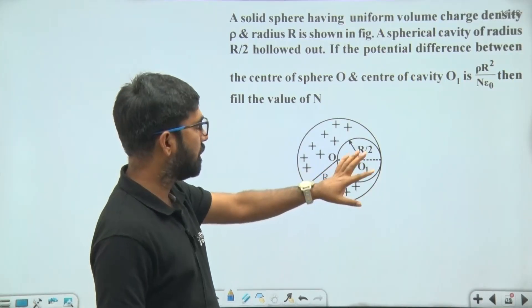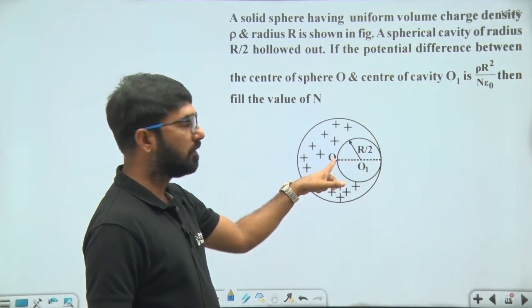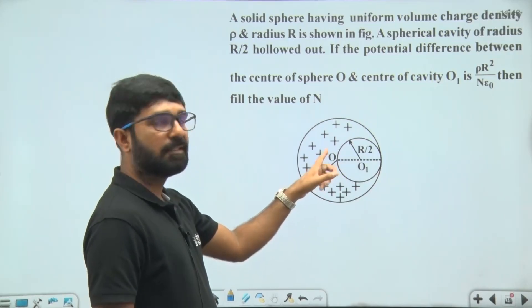This is the cavity radius R by 2. Center of cavity is O1. Center of sphere is at O. Volume charge density is rho.